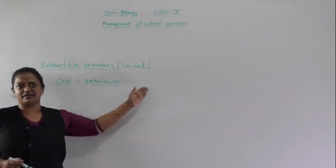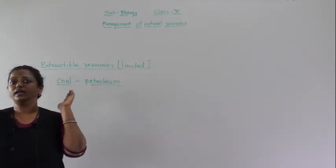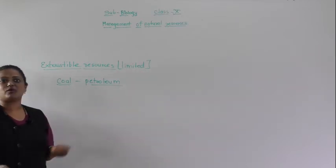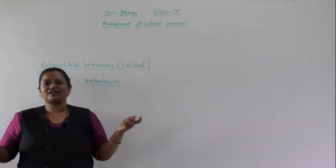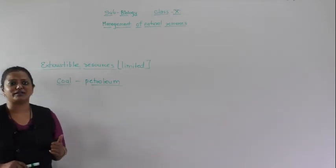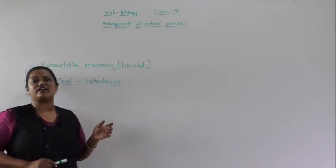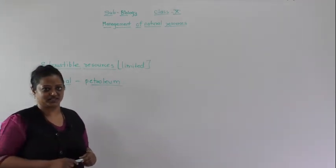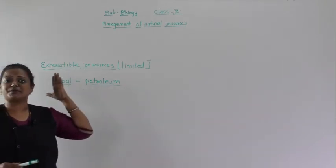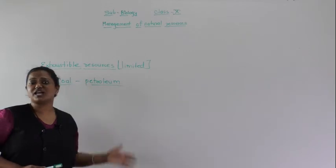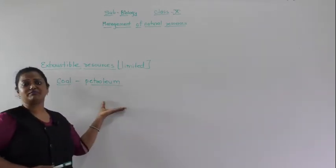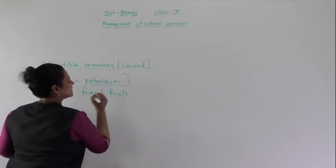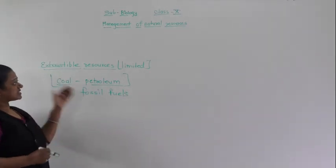Coal and petroleum are examples of exhaustible resources — limited resources which cannot be replenished or recharged, present in limited amounts on earth. Coal and petroleum are commonly called fossil fuels, because we get them from fossils. If they finish, then it would be our turn to become coal and petroleum for the next generation — you know the formation process. So exhaustible resources are those present in limited amounts which cannot be replenished, and the example is coal and petroleum, i.e., fossil fuels.